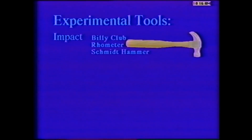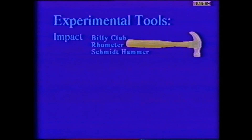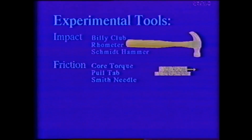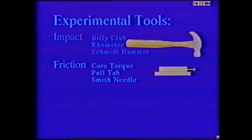The first measurements of wound rolls were made by striking the rolls with a billy club and noting their hardness. The tightness of the wind was related to and gauged by the hardness of the impact. This impact hardness of rolls can be quantified by instruments such as the Beloit roll meter and Schmidt hammer. The next category of wound roll measurements is the quantification of inner layer pressure by friction measurements, such as core torque, pull tab, and Smith needle.